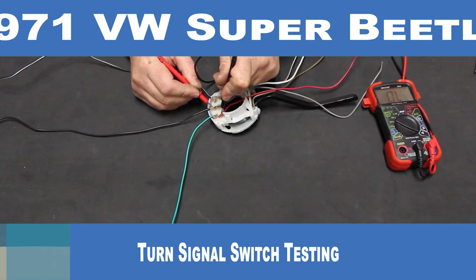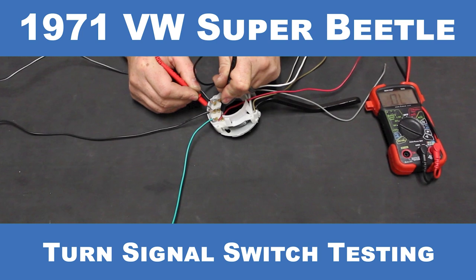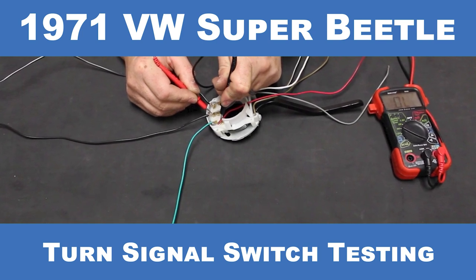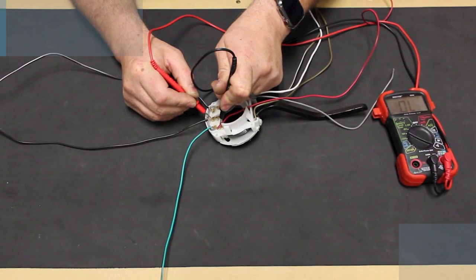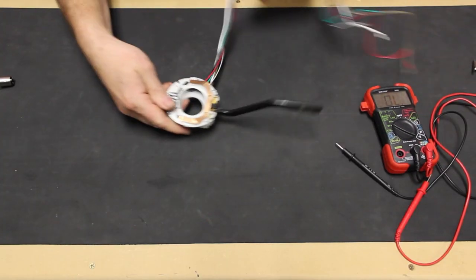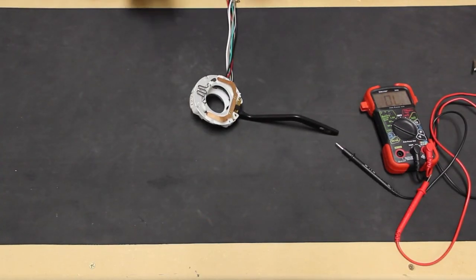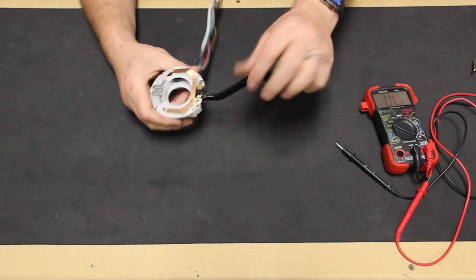In this video, we're going to be testing a new turn signal switch as the original switch for our 1971 Super Beetle had a broken cancellation mechanism. We've replaced it with this aftermarket unit that we'll test here at the bench like we've done with all of our other switches.